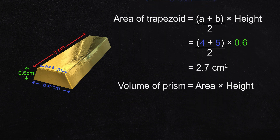To find the volume of the whole gold bar, multiply that area by the height of the gold bar — that's the other dimension of 8 centimeters. The volume of this gold bar is 21.6 cubic centimeters. That's a lot of gold.